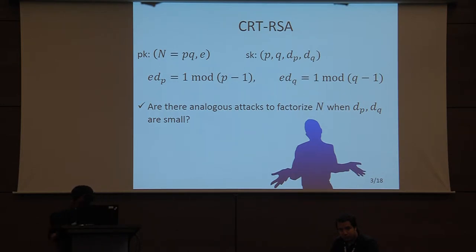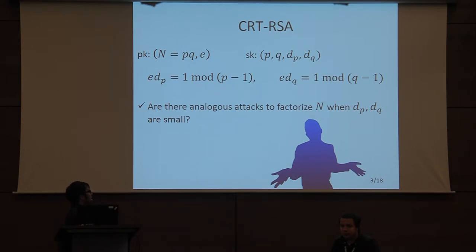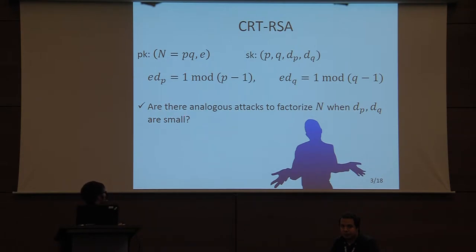A natural question is whether there are analogous polynomial time attacks on CRT-RSA when dp and dq are small — analogous to the Boneh-Durfee attack.